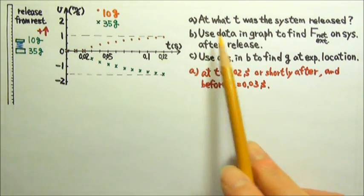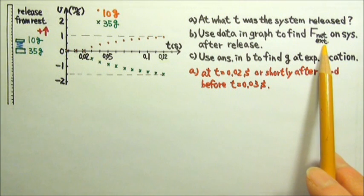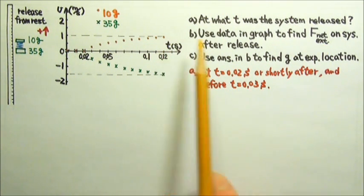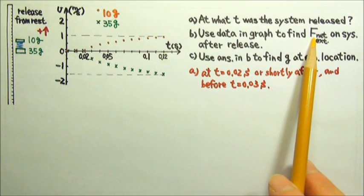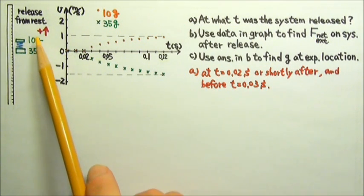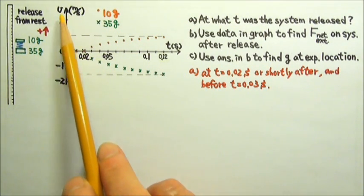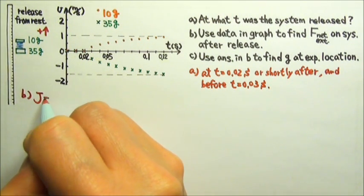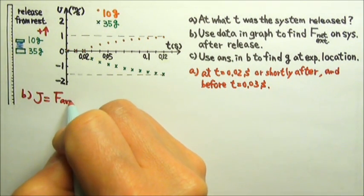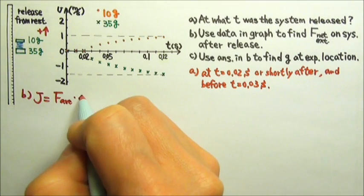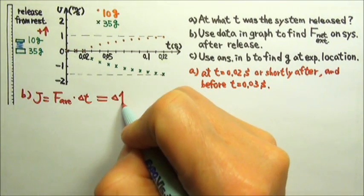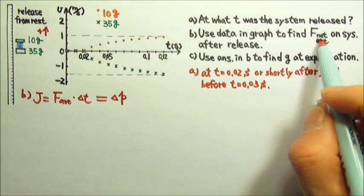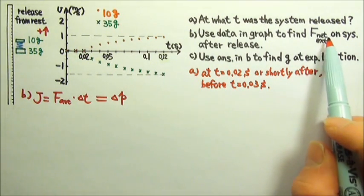Part B: We have to find the net external force on the system. We have information about time, and we want to find the force. We have information about mass and velocity, so the impulse equation can be useful. Impulse is the average force times time. It is also the change in momentum, because this force we're looking for is the net force.